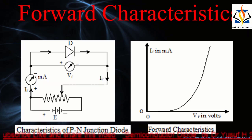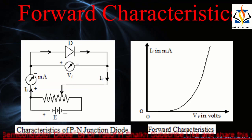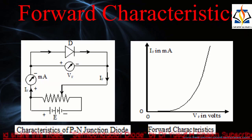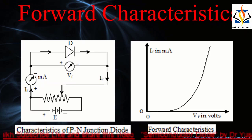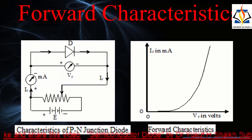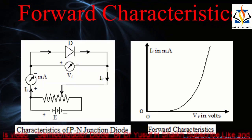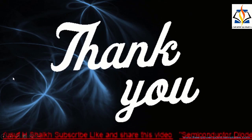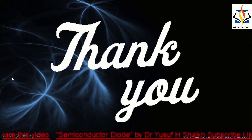If the forward voltage is further increased, the forward current increases rapidly, as shown by the steep part of the characteristics curve. The forward characteristics of a p-n junction diode is not a straight line, so its resistance — the voltage to current ratio — is not constant. Therefore, a p-n junction diode does not obey Ohm's law and is a non-linear device. Thank you dear students for your patient listening; see you again in the next video. Bye bye, take care.